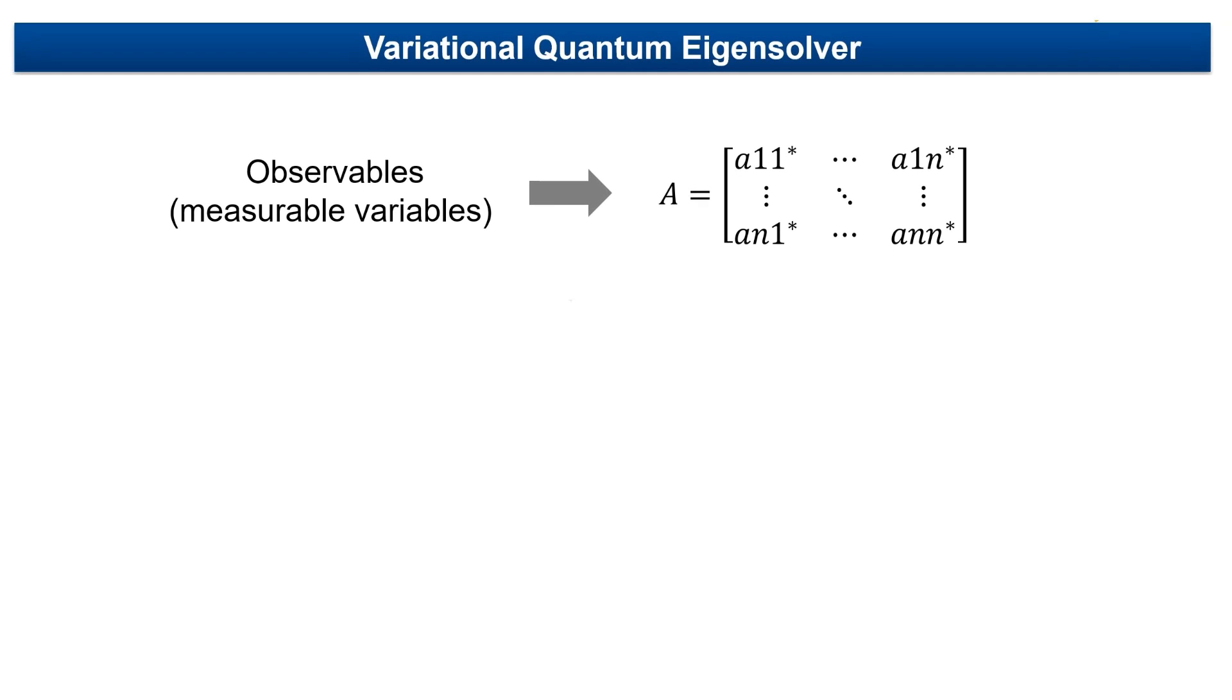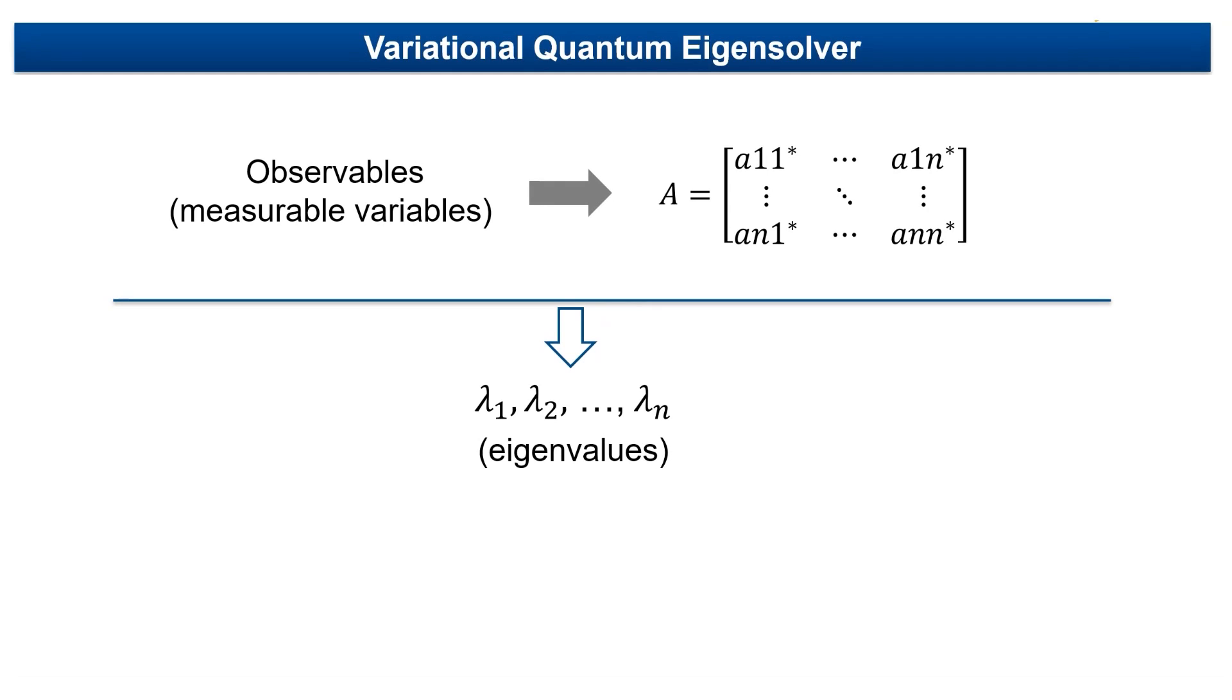When you measure an observable of a quantum system that is bounded, you get some discrete or quantized values. These are the eigenvalues of the observable matrix. These eigenvalues will have corresponding eigenvectors.